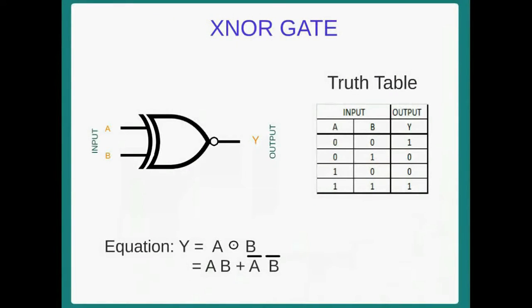Now we will discuss about XNOR gate. Two inputs are there. One input is A and another is B. The output is Y. This is the complement of XOR gate. For different inputs, output is logic low, that is 0. And for same inputs, output is logic high, that is 1. Equation: Y equal to A XNOR B, equal to AB plus A bar B bar.